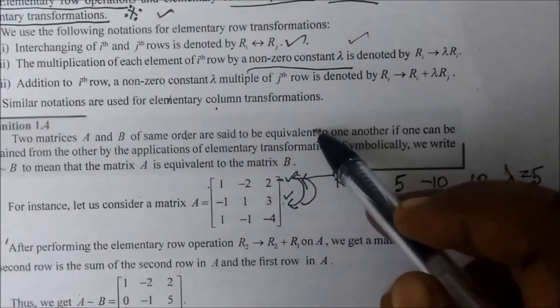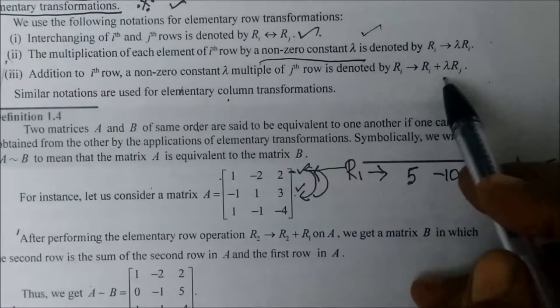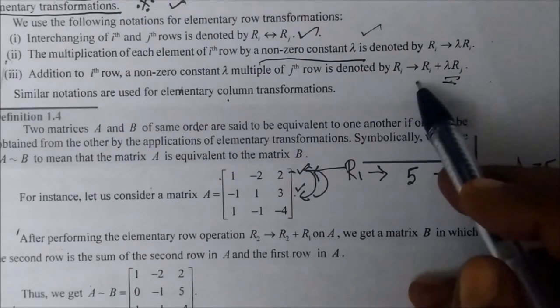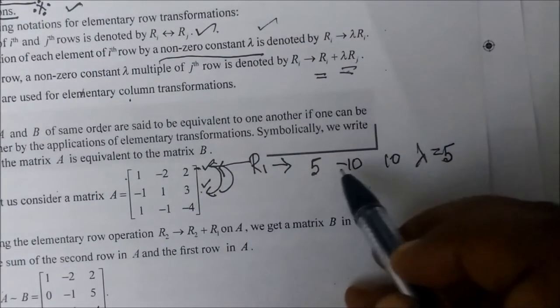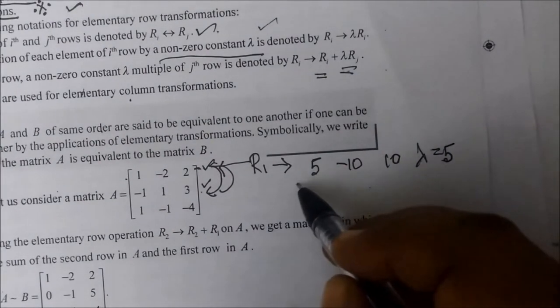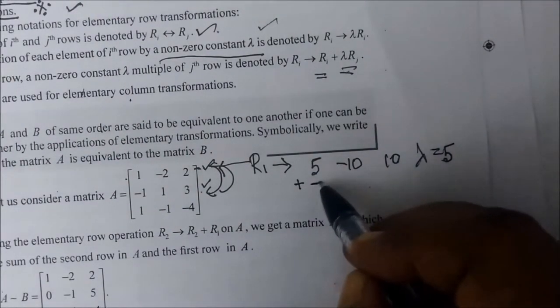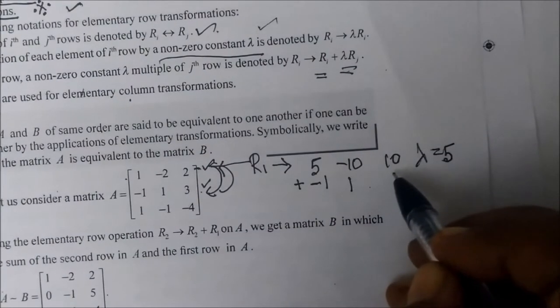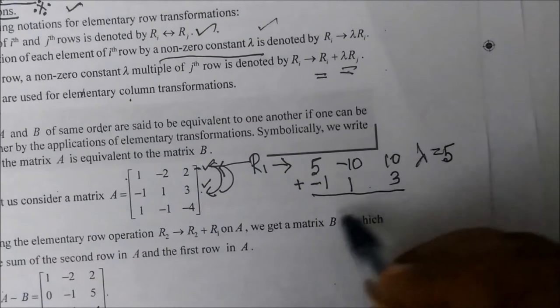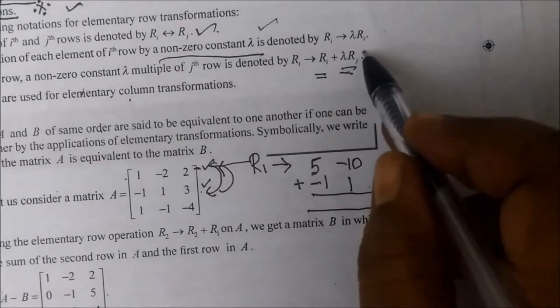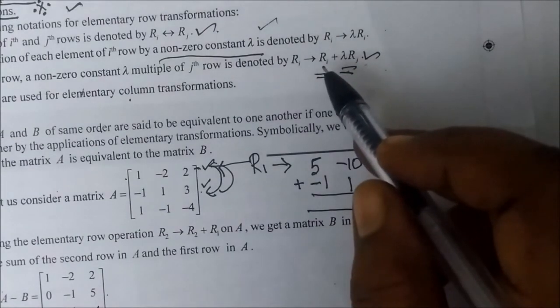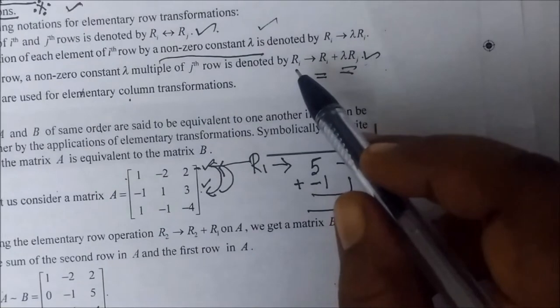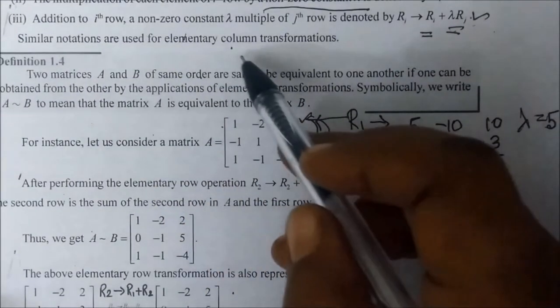Lambda is any non-zero number. The third operation: if we multiply a row or column by lambda and add it to another row, we add the result to R2. For example, multiplying by lambda and adding to R1 or R2 gives entries such as minus 1, 1, and 3. That is the third point.